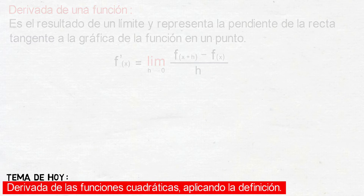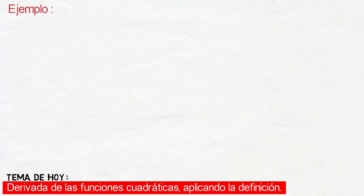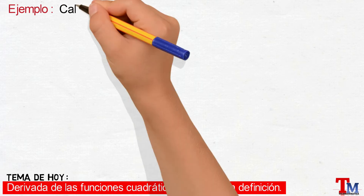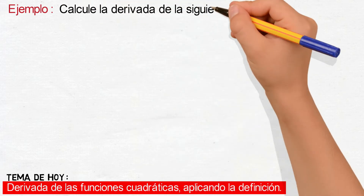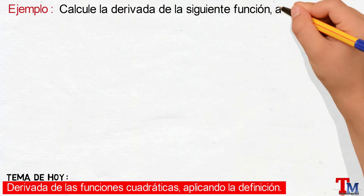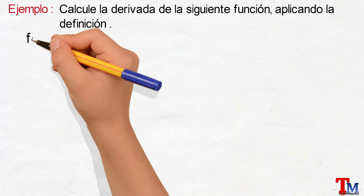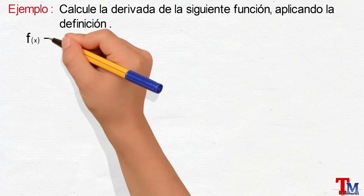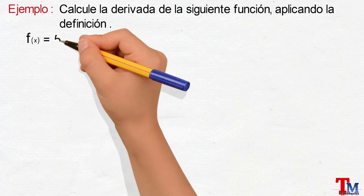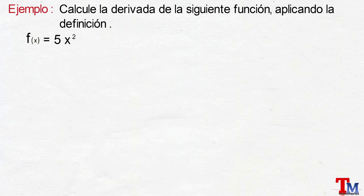A continuación, realizaremos un ejemplo de cómo aplicar la definición a la función cuadrática de la forma f(x) igual a a por x elevado al cuadrado. Calcule la derivada de la siguiente función aplicando la definición: f(x) va a ser igual a 5x elevado al cuadrado.